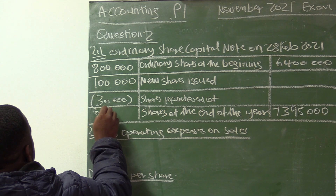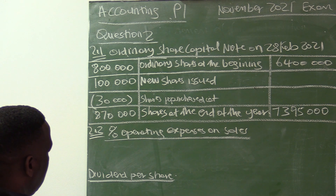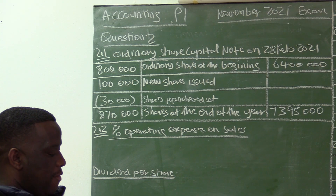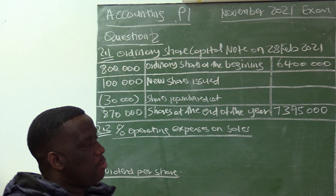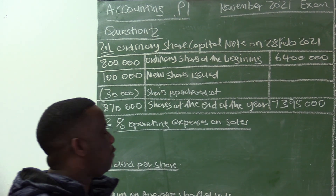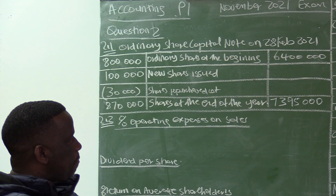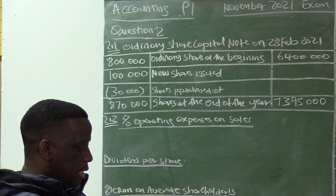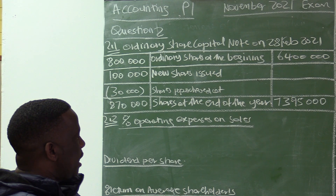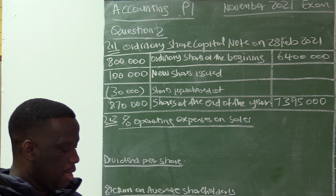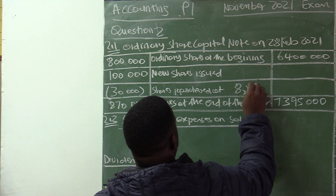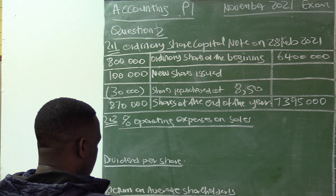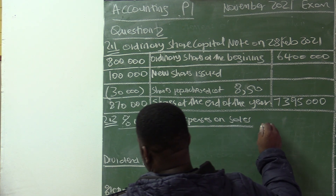Minus 30,000 equals 870,000 — the total number of shares in issue at the end is 870,000. It is allowed to calculate the average issue price using the amounts at the end if there is a missing amount. The missing amount here is for the new shares issued. So: 7,395,000 divided by 870,000 equals 850. Our average issue price is 850. Therefore 30,000 multiplied by 850 equals 255,000.